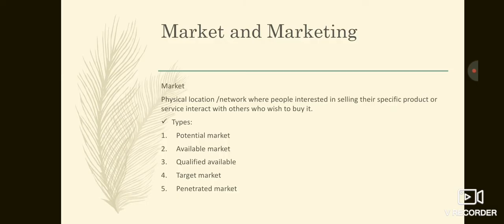There are different types of market. The types of markets are: potential market, available market, qualified available market, target market, and penetrated market. First we can go into the potential market. It is a proportion of the total population who are likely to be interested in acquiring a specific product from the market.